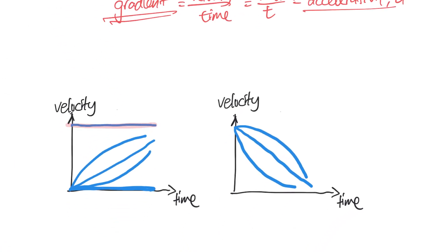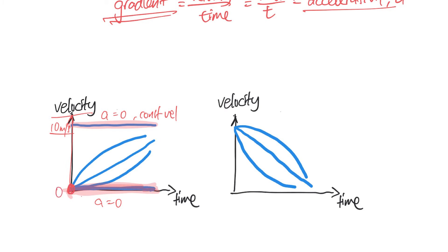You just need to replace the word 'gradient' with 'acceleration.' A flat line has zero gradient — zero acceleration. But be careful: there are two zero-acceleration cases. If the y-axis shows 10 meters per second, the car is traveling at a constant velocity of 10 m/s with no change in speed. On the other hand, if the velocity reads zero, it's also zero acceleration, but the car is at rest and not moving.